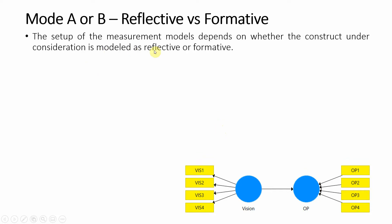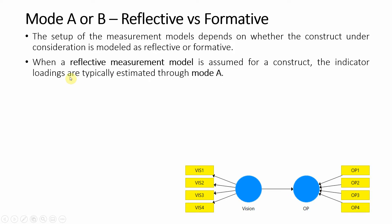The setup of the measurement model depends on whether the construct is reflective or formative. By default, PLS-SEM assumes that it is a reflective construct whereby these items are interchangeable. When a reflective measurement model is assumed for a construct, the indicator loadings are typically estimated through Mode A, although when a construct is reflective you do not need to explicitly mention Mode A.